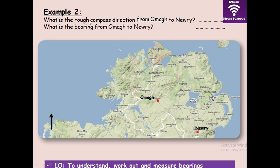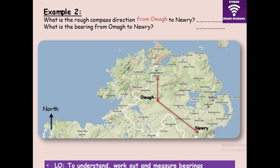Let's look at the second example. What is the rough compass direction from OMAG to Newry? As usual, the keyword is 'from,' so we draw our north from OMAG, connect the two places, and indicate our north. Now estimate the direction of Newry — that's southeast. Well done if you said southeast. Now, what is the bearing from OMAG to Newry? First take an estimate: this angle is obtuse — more than 90 but less than 180 degrees.